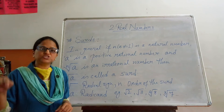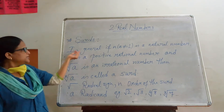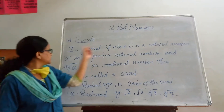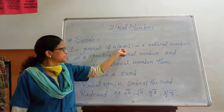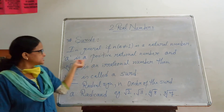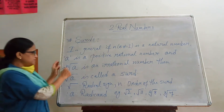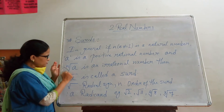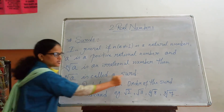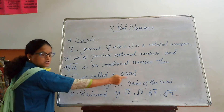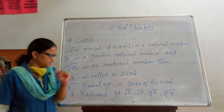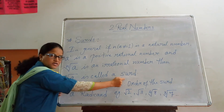In general, if L is a natural number but L is not equal to 1, and A is a positive rational number, and the Nth root of A is an irrational number, then this Nth root of A is called a surd.